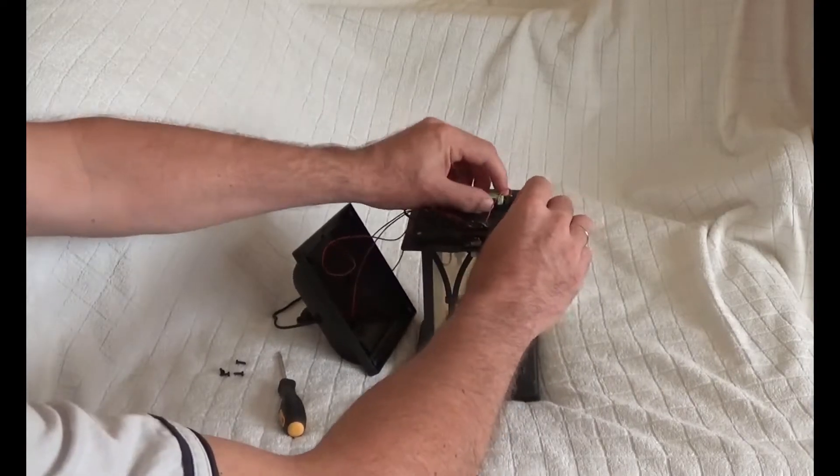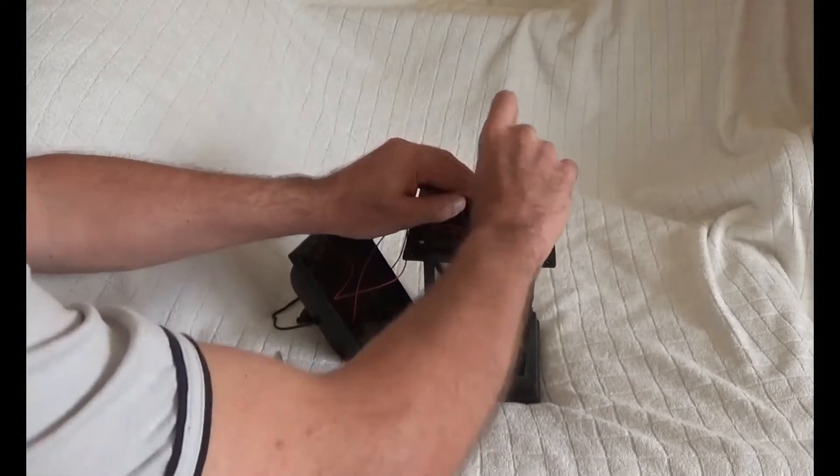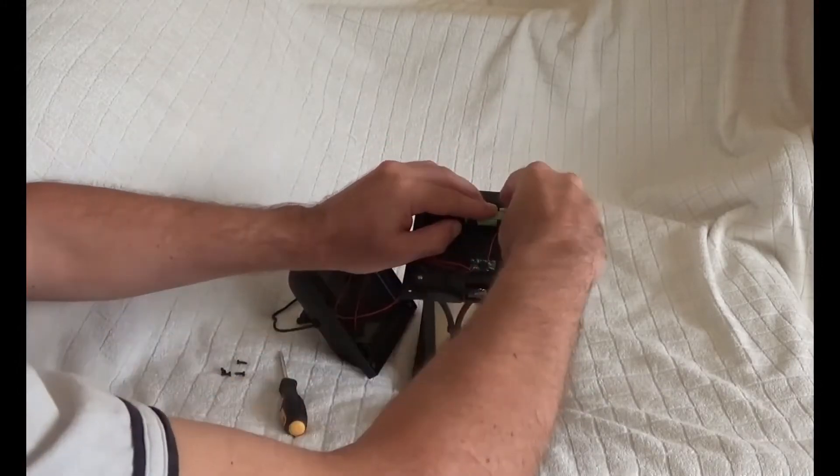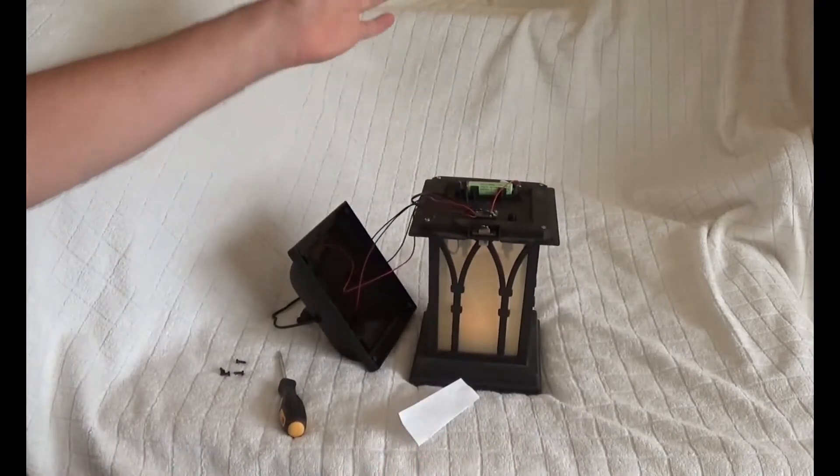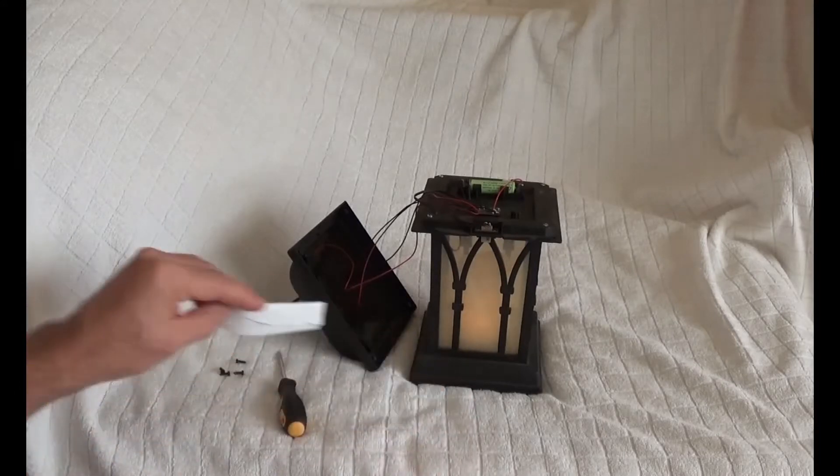We will use a piece of paper for this work. We will jam the paper between the battery and the holder. Now we are done and the battery no longer pops out of the holder, but the battery stays in place.